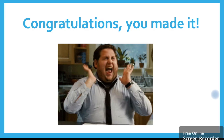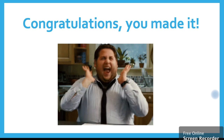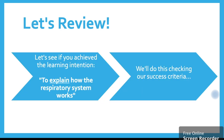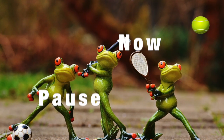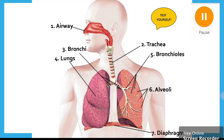Congratulations, you made it! Now it is time to test your knowledge. We're going to review our lesson to see if you've achieved the learning intention. For our first success criteria — can you identify the main bits of the respiratory system? Write the numbers 1 to 7 and use the following diagram to label. The answers are: one — airway, two — trachea, three — bronchi, four — lungs, five — bronchioles, six — alveoli, and seven — diaphragm. If you didn't quite get them all, write them in now.